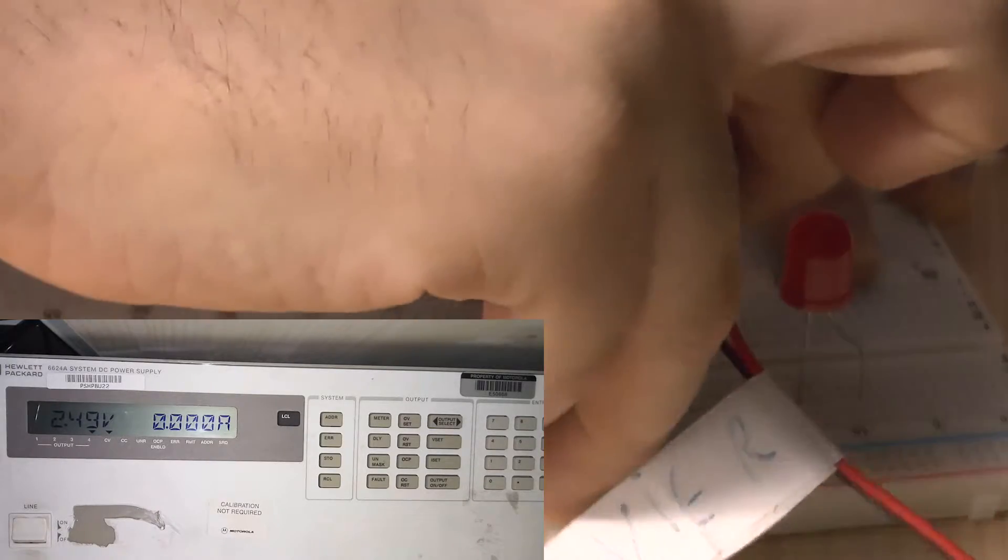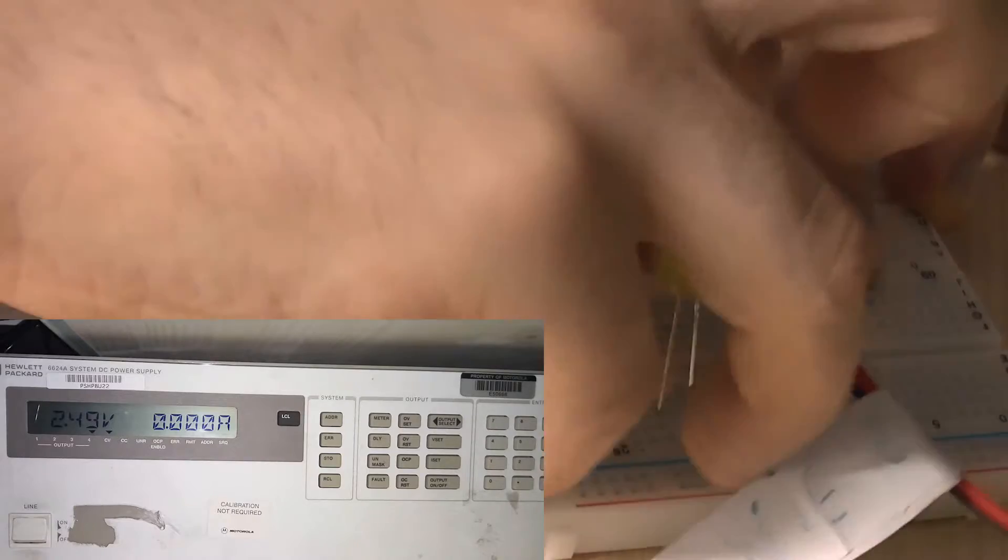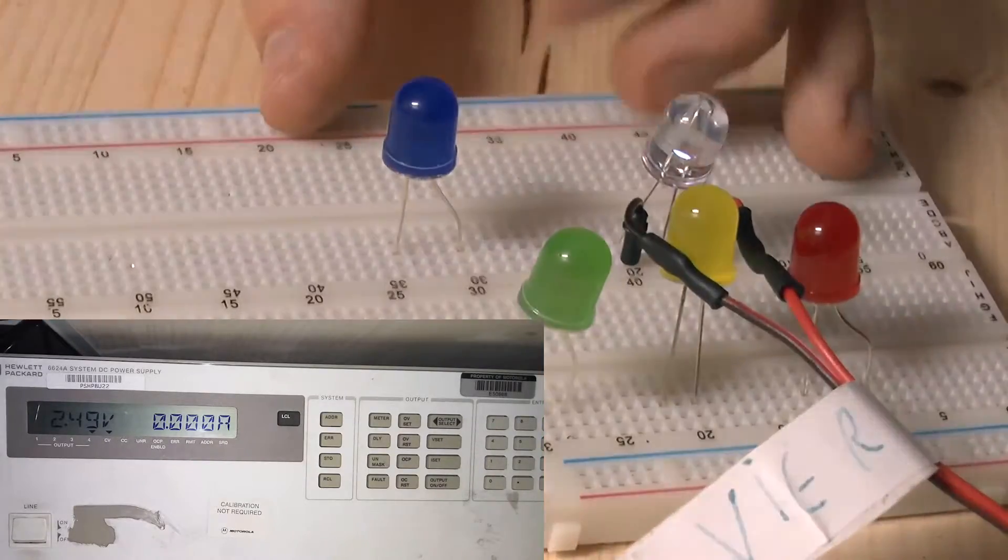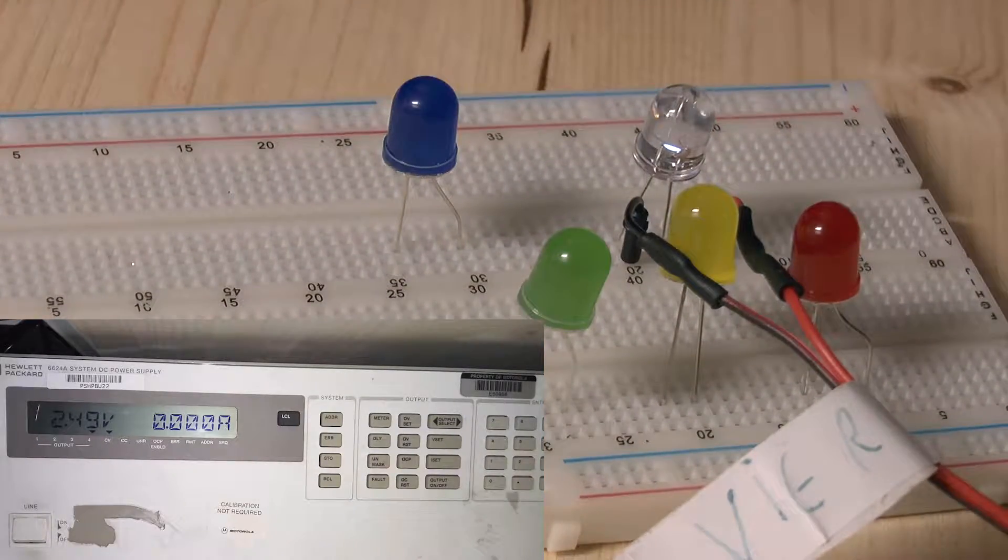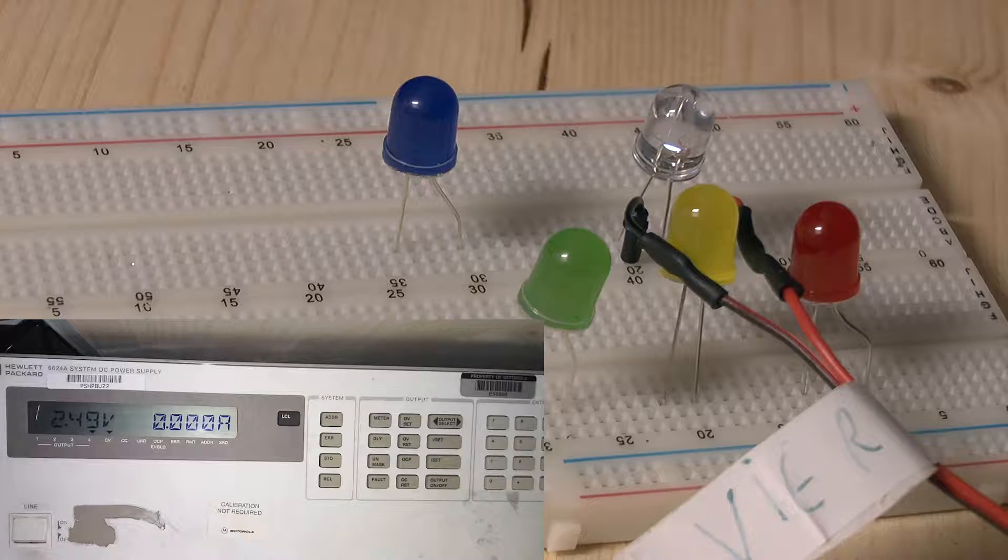And if we move on to the white LED, we see something similar. So, we see at 2.5V, we don't get particularly much light.